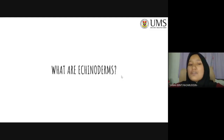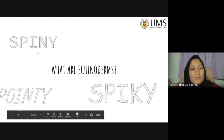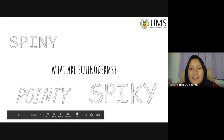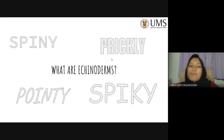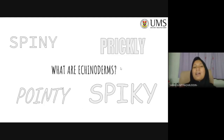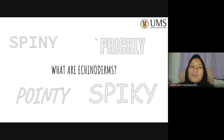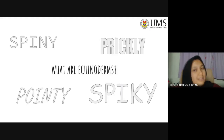Let's first separate the word: 'echino' and 'derm.' Echino refers to anything that is spiky, spiny, pointy, and prickly. Derm is just another way of saying skin. So in conclusion, echinoderms are organisms that are spiky and spiny — but what organisms other than starfishes fall under this description?